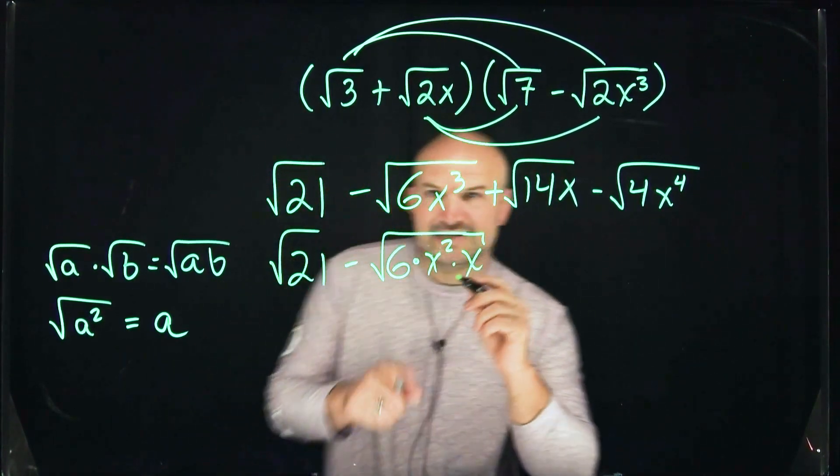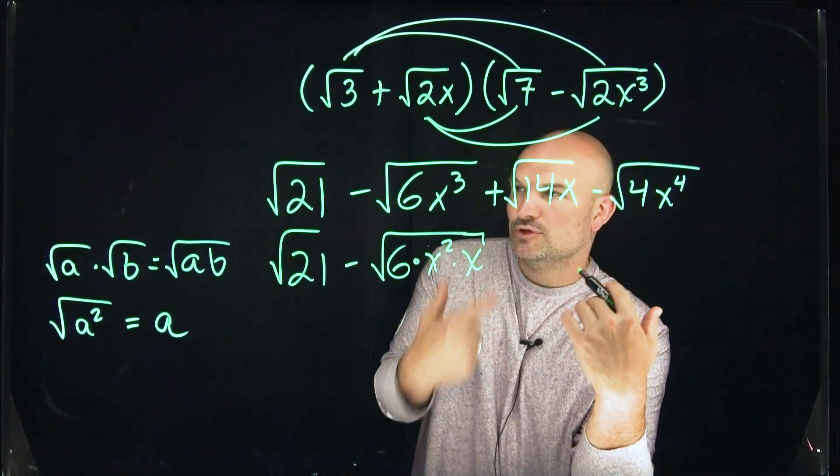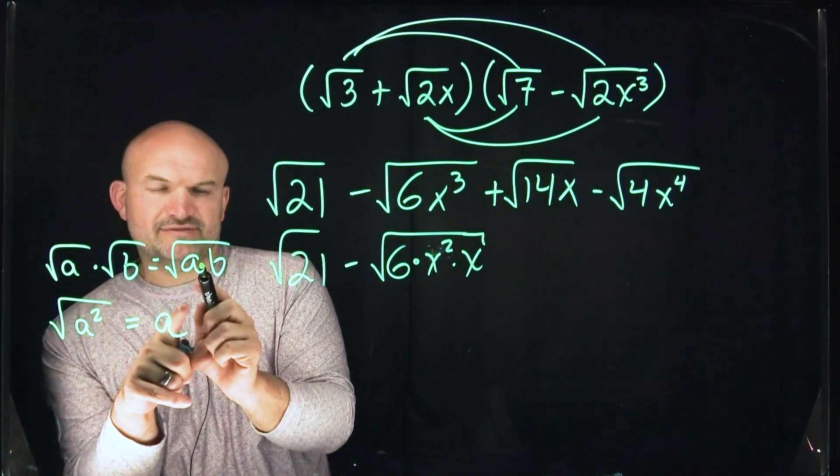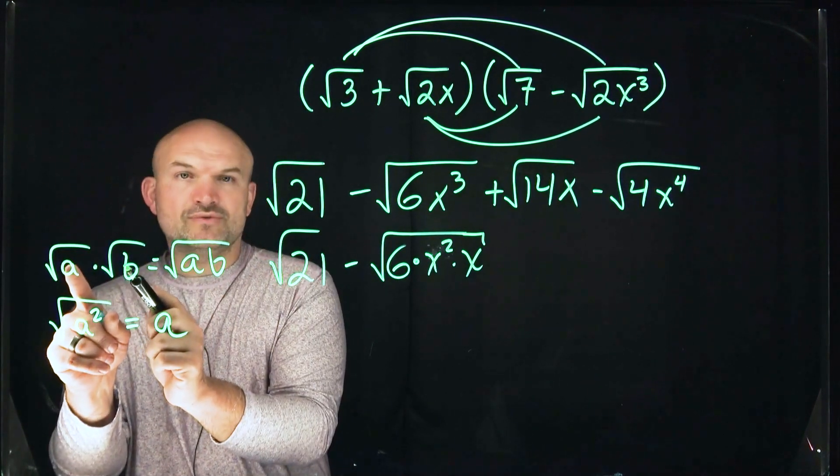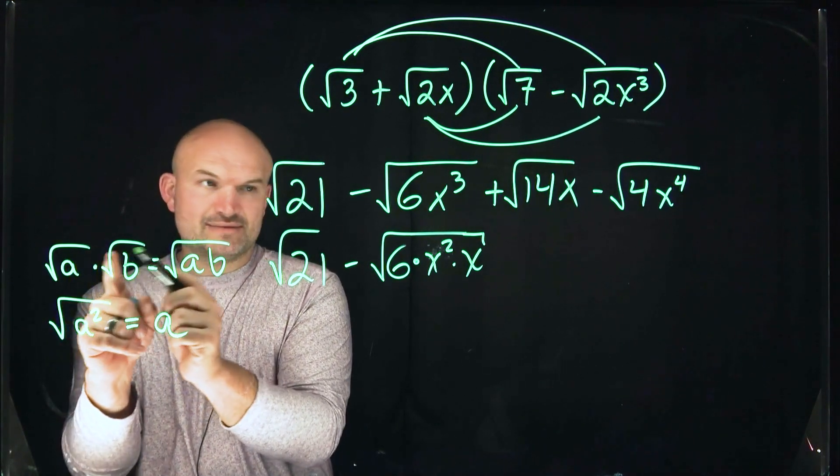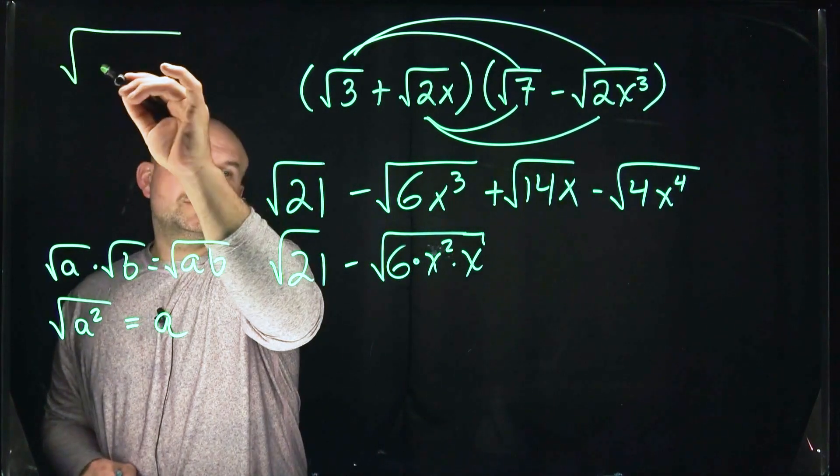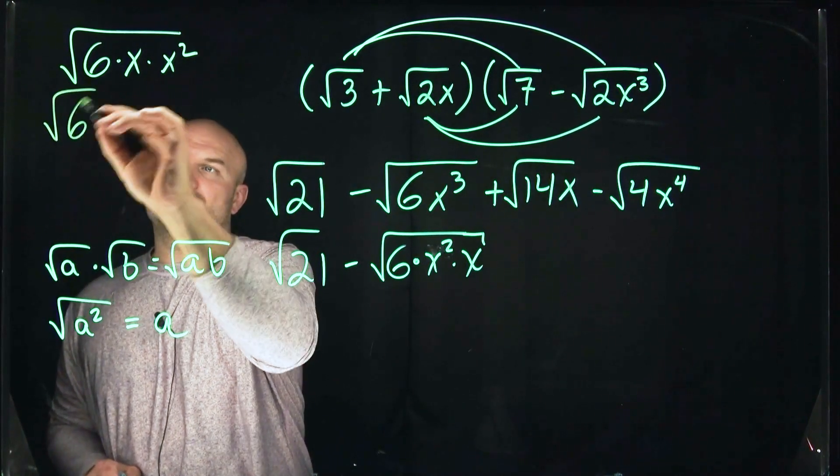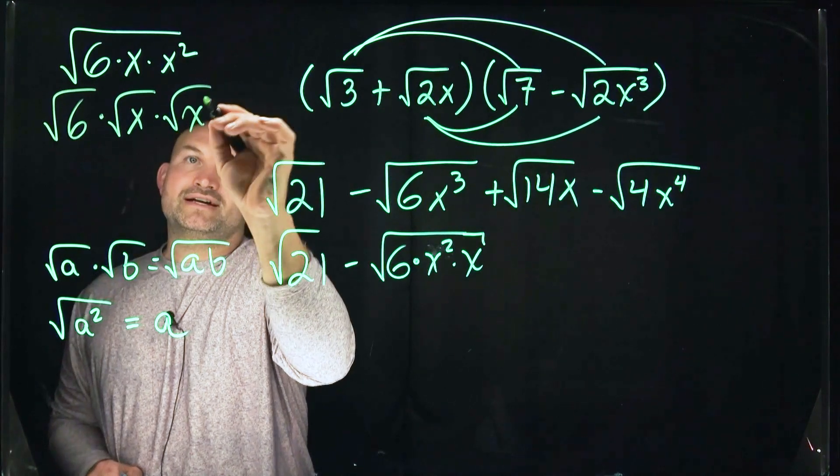See what I did here? What I did is I rewrote an x cubed as an x squared times x. Now, why would I do that? Well, the cool thing is with this property, just like how we can multiply the square root of a times square root of b to give us the square root of a times b, we can also take the product under a radical and separate it into their own square roots. So the square root of a times b is the same thing as square root of a times square root of b. So what that means here is I can rewrite the square root of 6 times x times x squared. I can rewrite that as the square root of 6 times the square root of x times the square root of x squared.